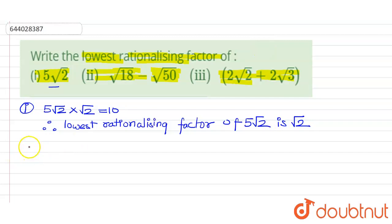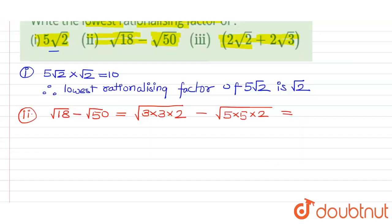Coming to the second one, let's first simplify it. This is given as root 18 minus root 50. Root 18 can be written as 3 multiplied by 3 multiplied by 2, minus 5 multiplied by 5 multiplied by 2, which is equal to 3 root 2 minus 5 root 2.